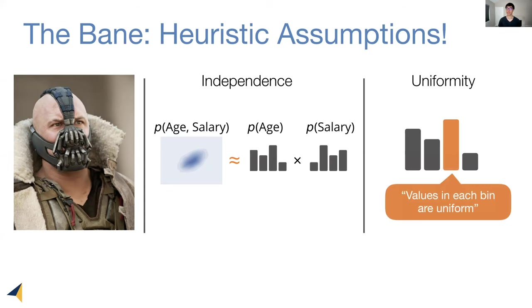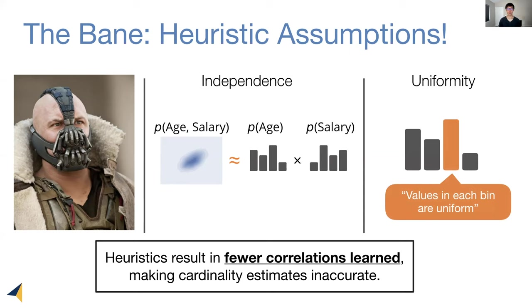The second heuristic assumption is called uniformity, where we assume values inside each histogram bin are distributed uniformly or equally likely. Therefore, the root problem is that any heuristics made result in fewer correlations learned about our data, therefore making cardinality estimates inaccurate. In this work, we take a direct approach in addressing this root problem.